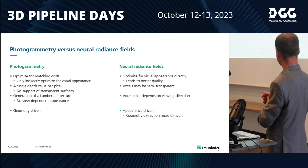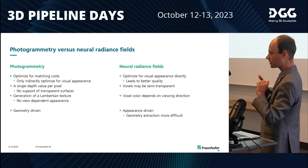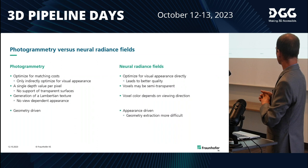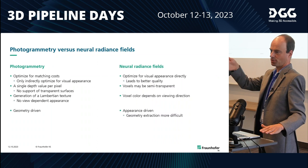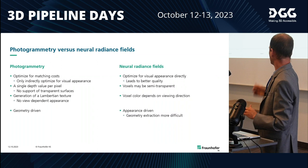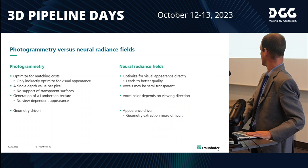Neural radiance fields go the other way around — you optimize directly for visual appearance, fitting the voxels to look as similar as possible to your photos. This is why you normally have better visual quality, and it also supports semi-transparencies and view-dependent effects, because the colors can change depending on the viewing angle and this is encoded in the voxel field as well. We will see later that the price you pay is that geometry extraction may be a little more difficult.